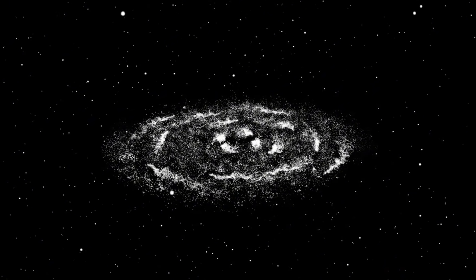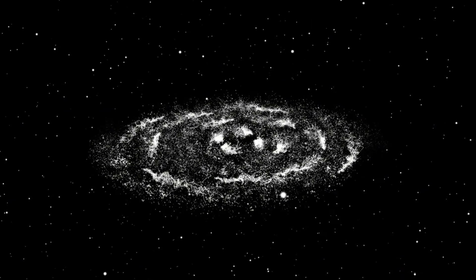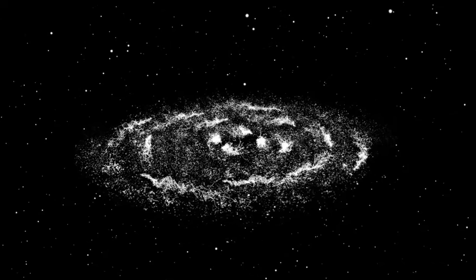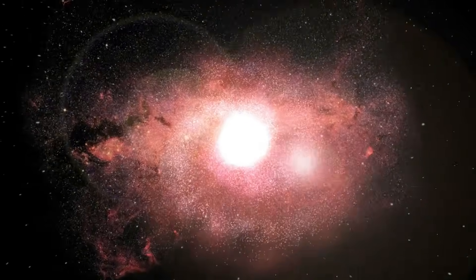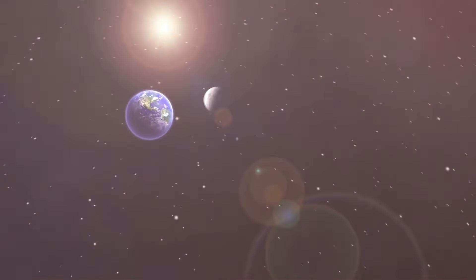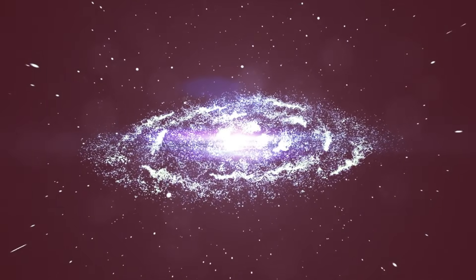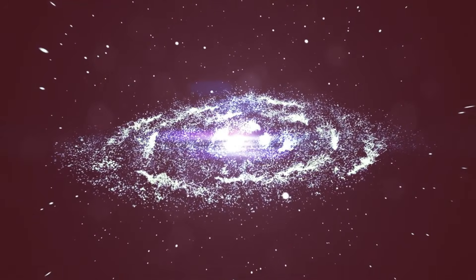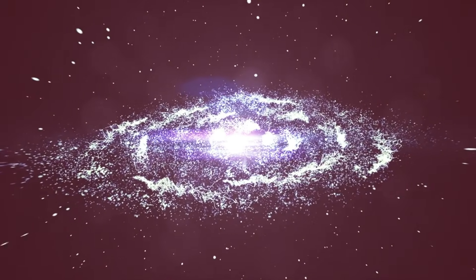Betelgeuse is approximately 600 light-years away from Earth. This means if we could travel at the speed of light, it would take us 600 years to reach it. Unfortunately, we can't travel at that speed, not even with our fastest spacecraft. Still, Betelgeuse shines brightly in our sky, despite its great distance.